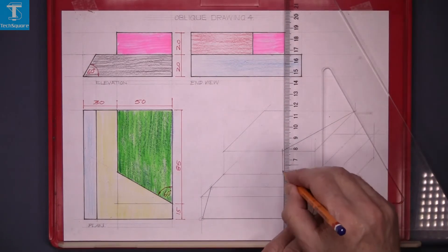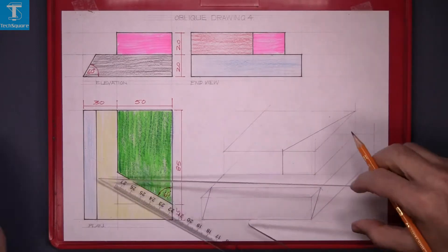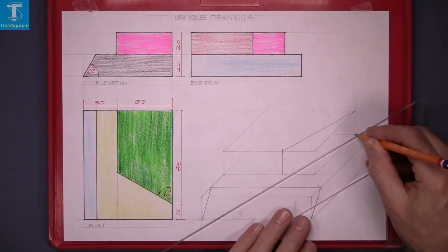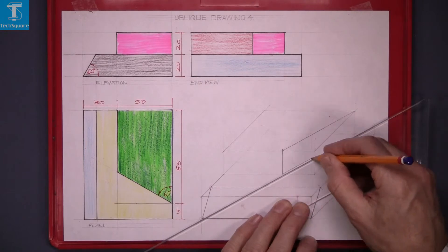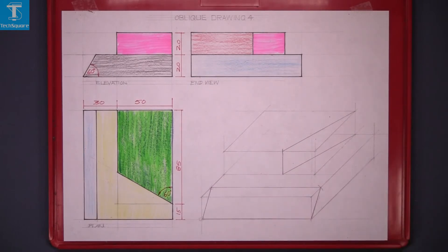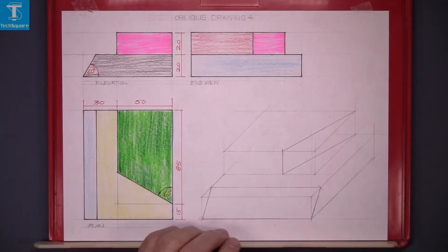Bring that point down to the bottom line there and that gets you the point to be joined back now. And that's the solid complete. Now line in your drawing.